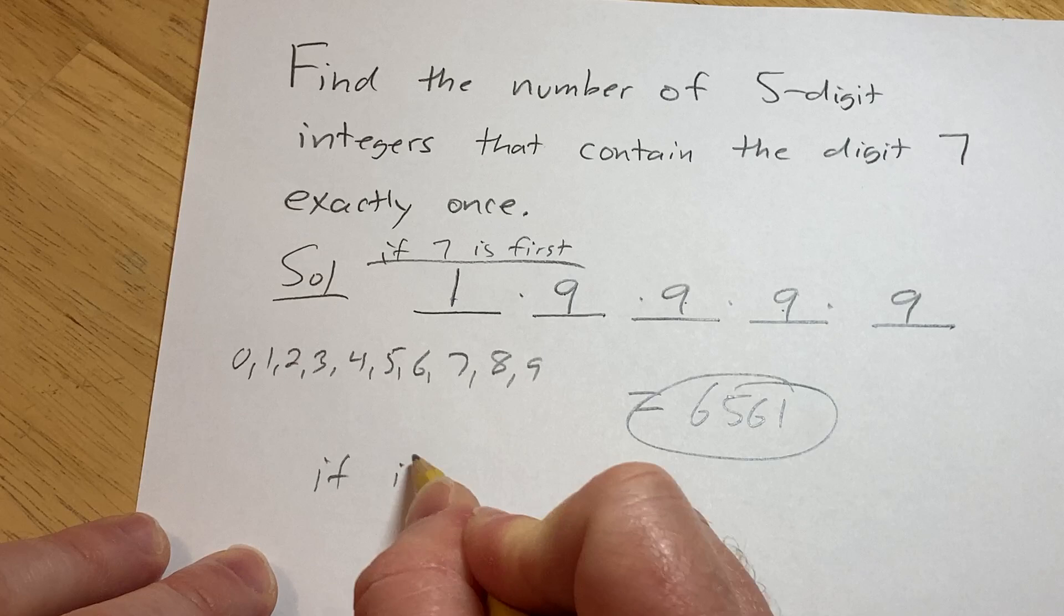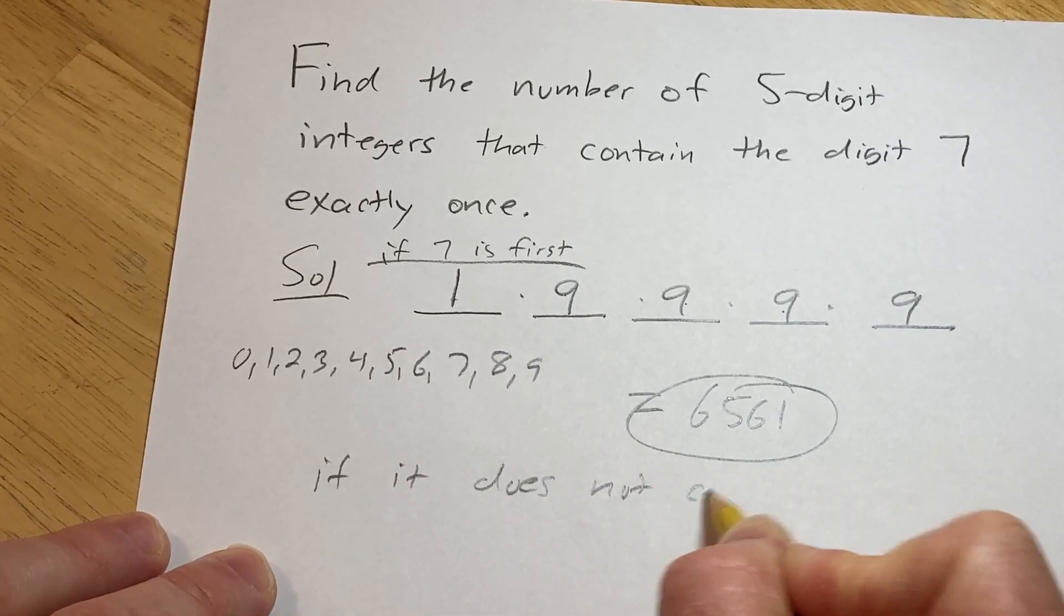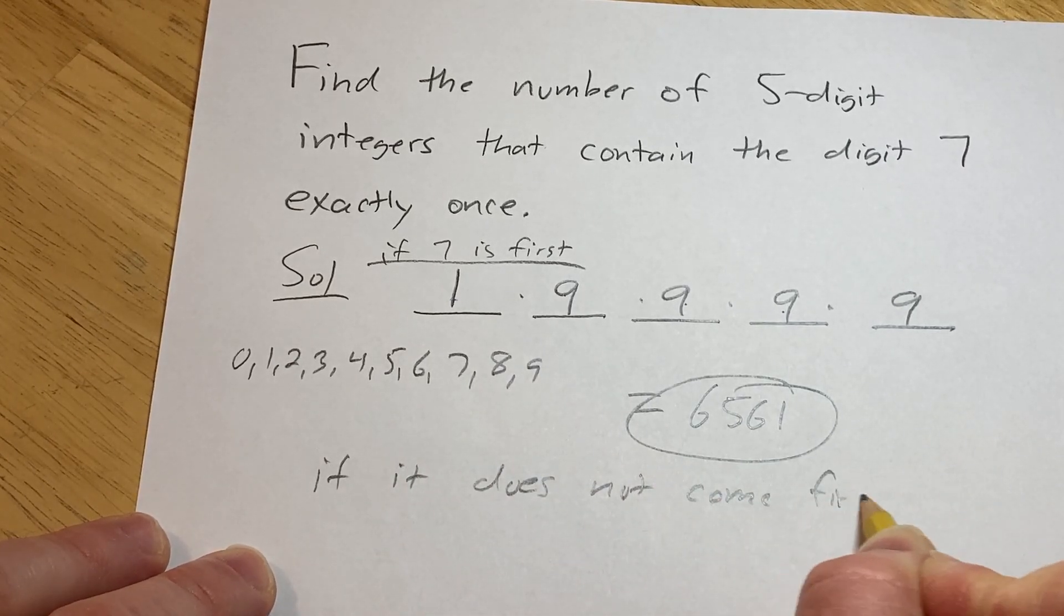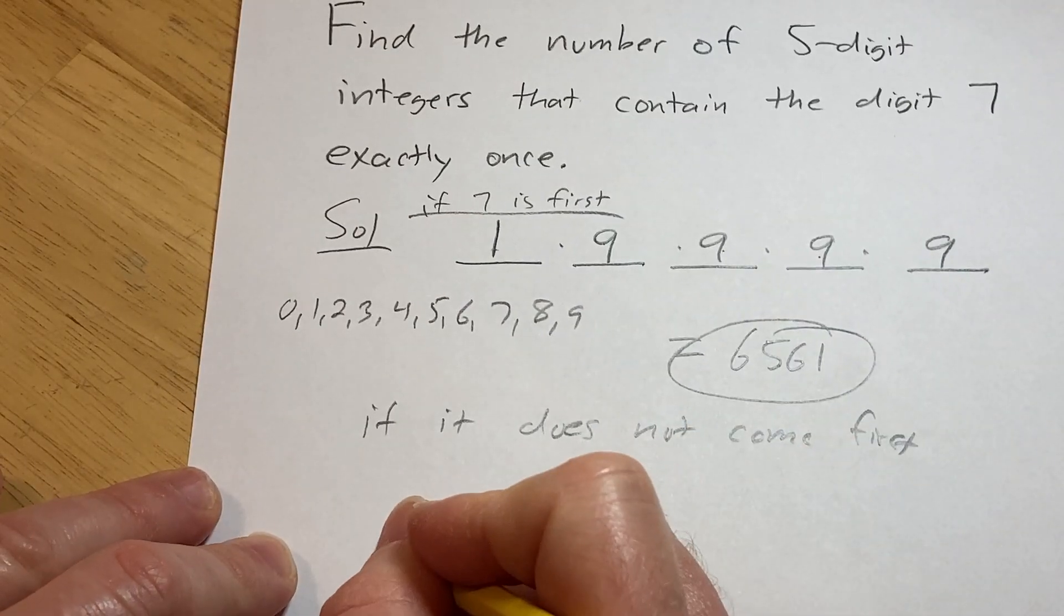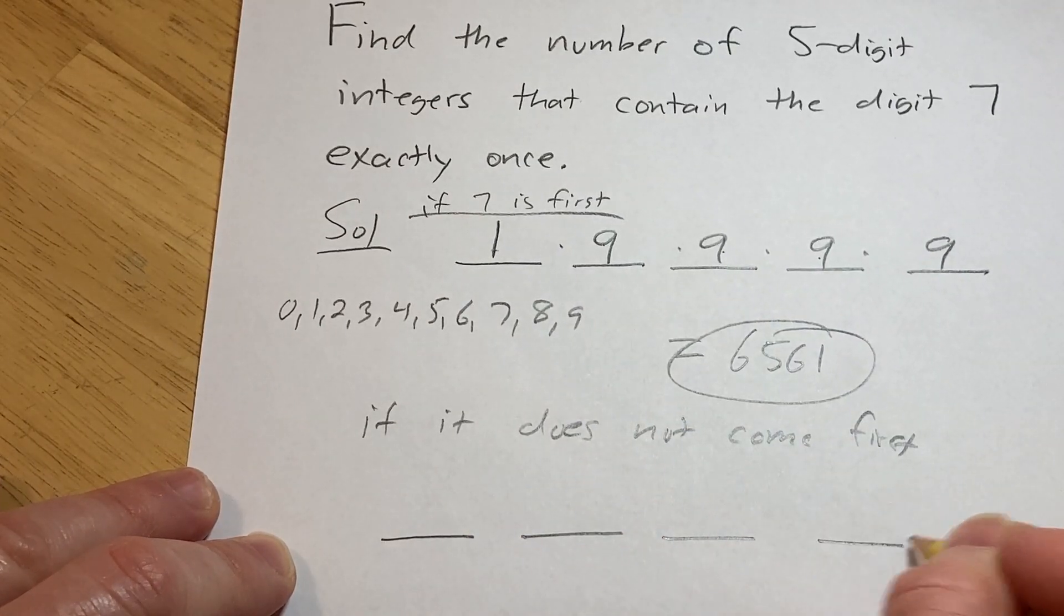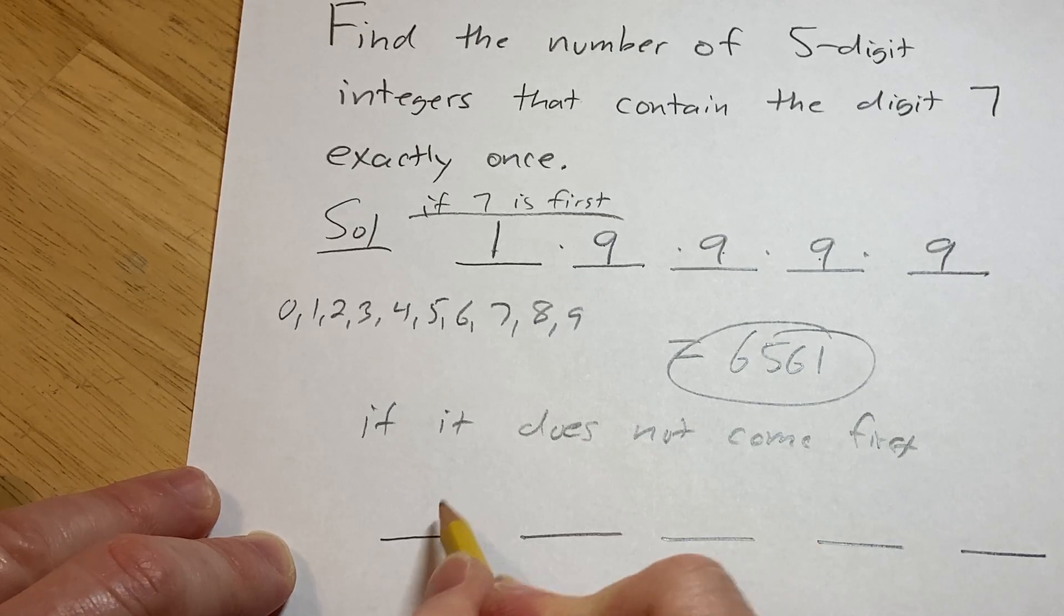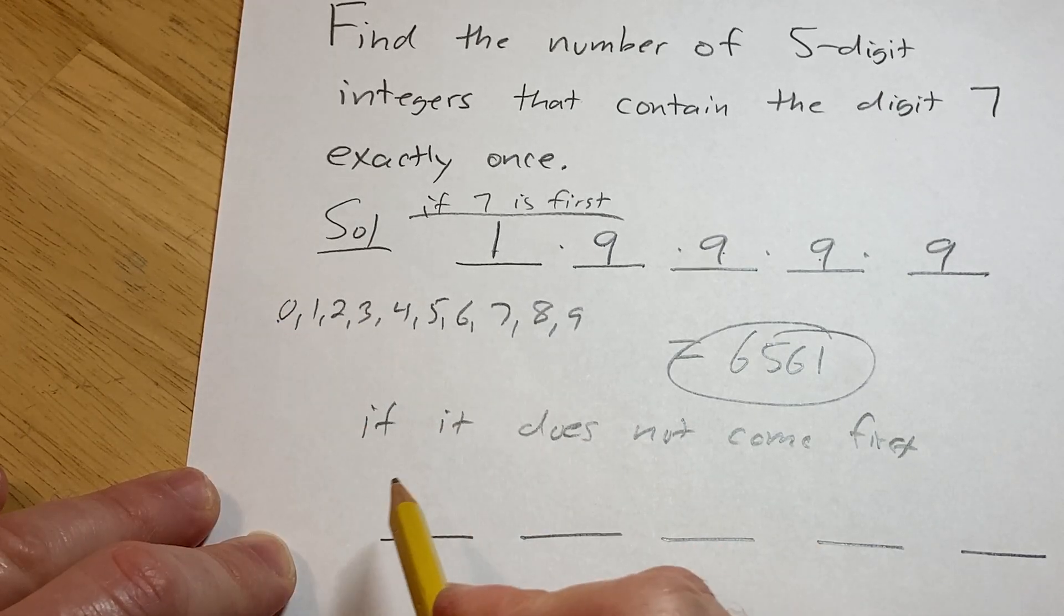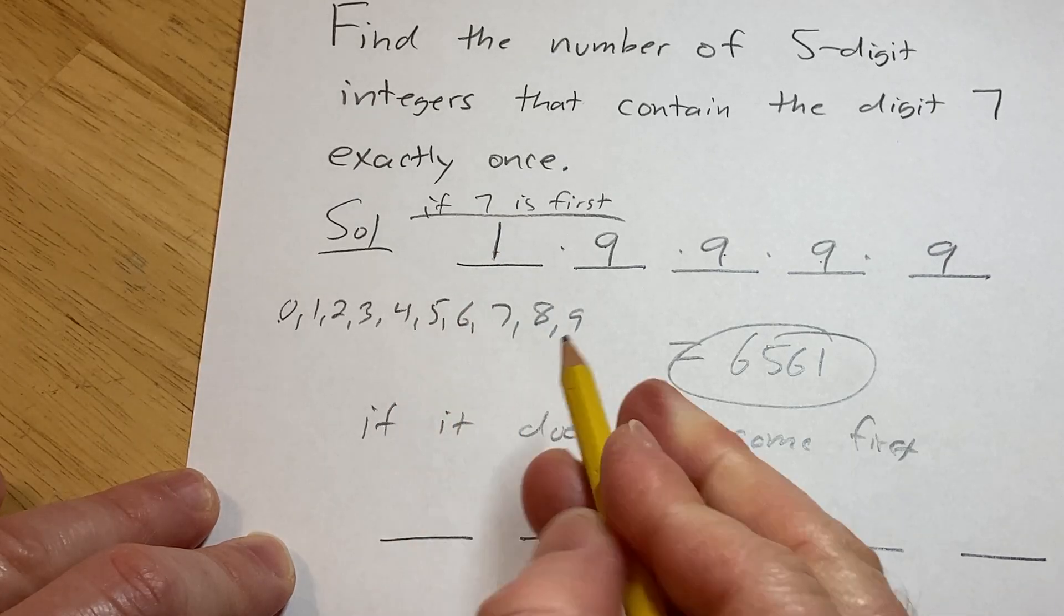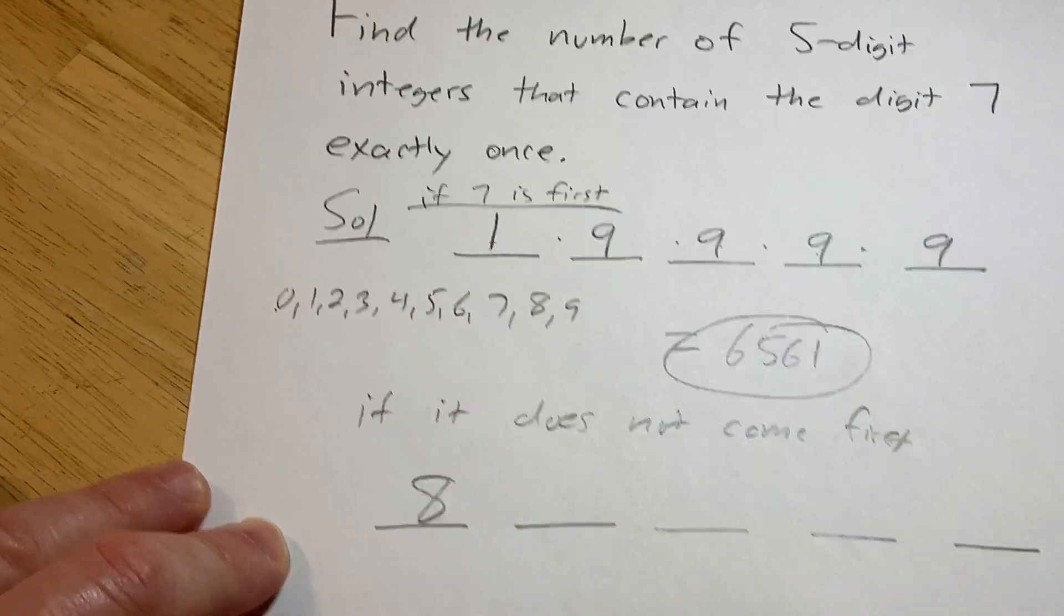If it does not come first, let's draw the picture again. 1, 2, 3, 4, 5. Well, if it does not come first, since 0 can't be the first digit and 7 is not the first digit, there's eight choices for the first digit.